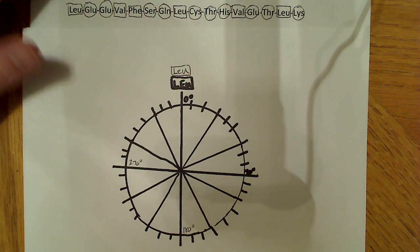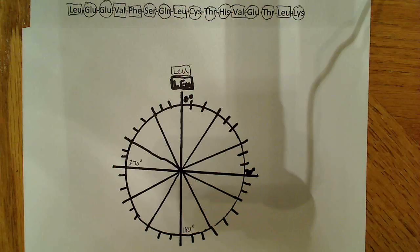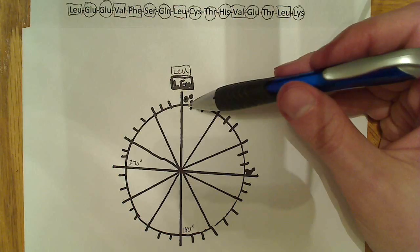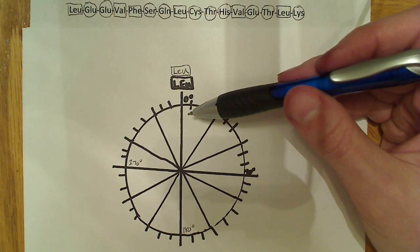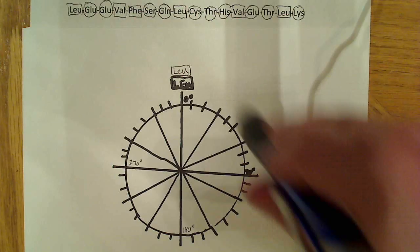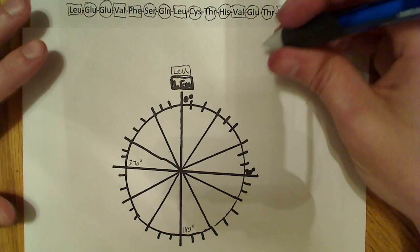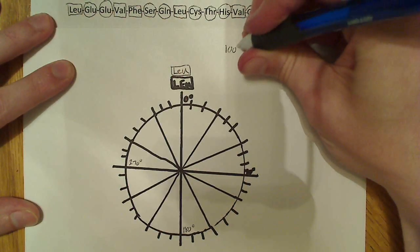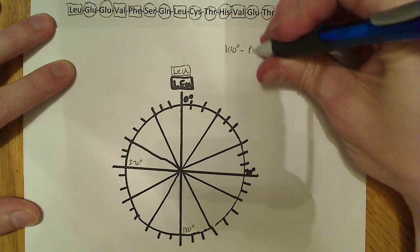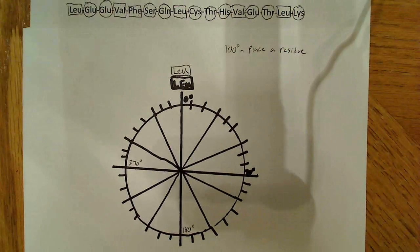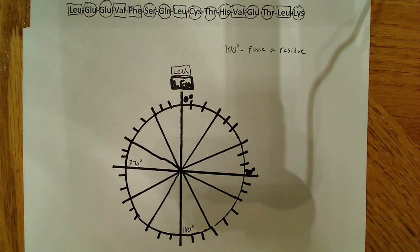You have to excuse my artistry here. And, I put the first leucine residue right here. So, that's already on here at zero degrees. Now, you might be asking, well, how do I know where to put the next residue? Well, we're going to go in a clockwise direction here. And, we're going to put a residue every 100 degrees. So, every 100 degrees, you place a residue. So, I'm going to do that. And, it's really quite simple.